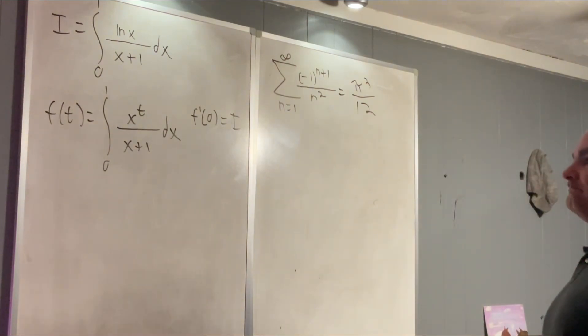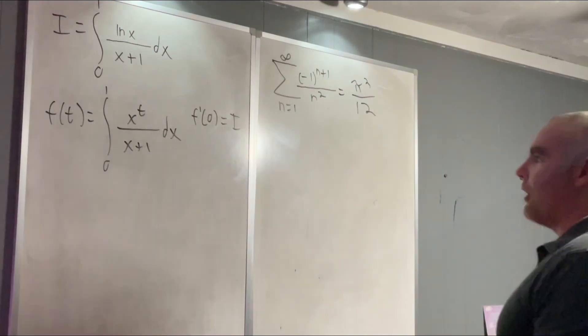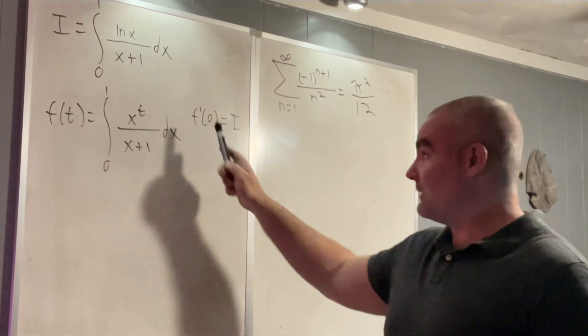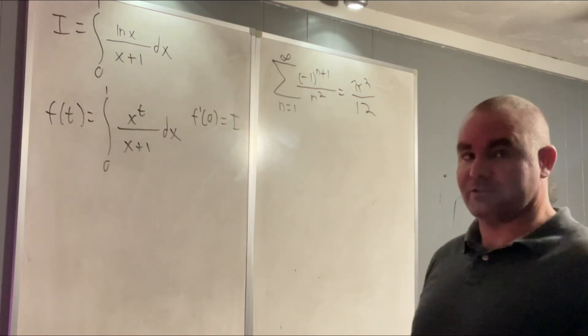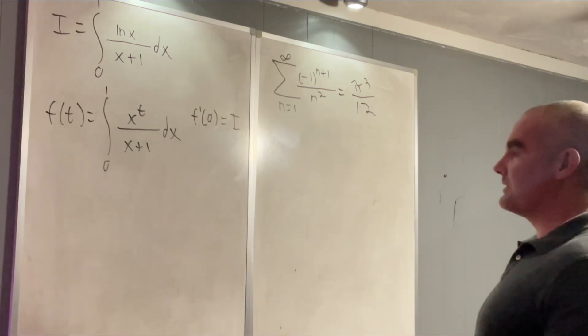So, yeah. All right. But how are we gonna find f prime of 0? Well, we could take a derivative with respect to t and then try to actually evaluate the integral. That's not the way to go, though. That's too difficult, maybe impossible.